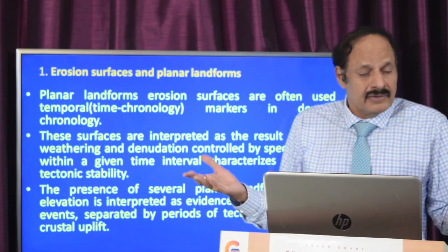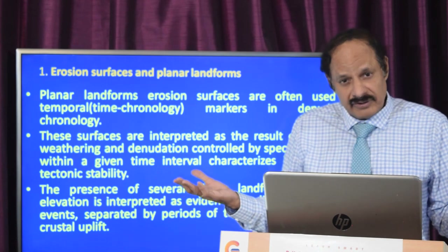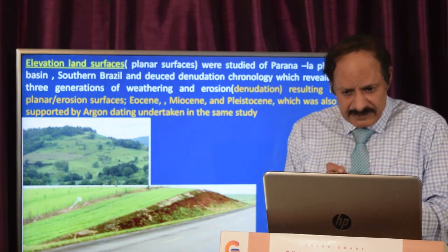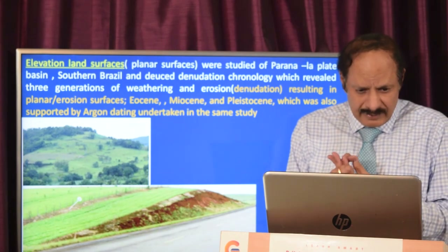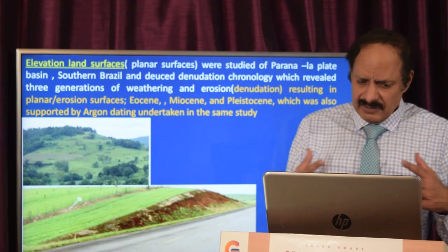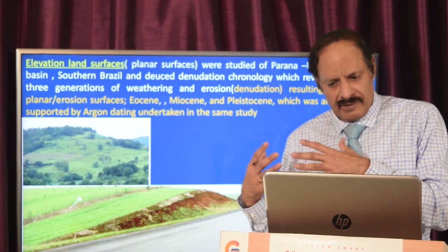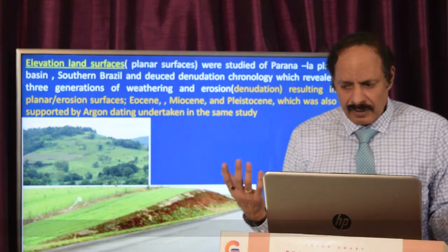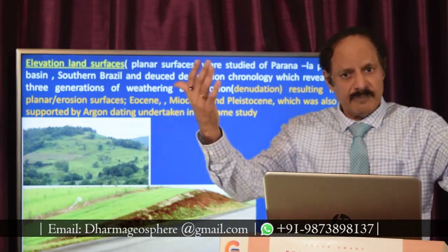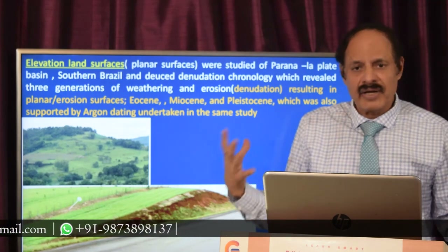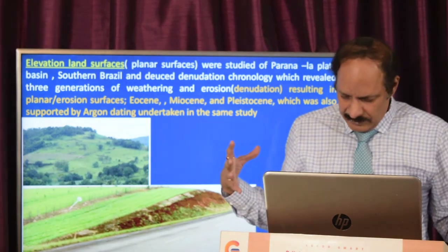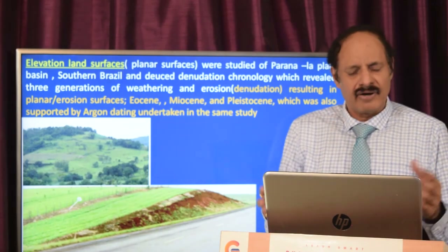It is very difficult to identify and use erosion surfaces where land has been uplifted, where there has been a lot of tectonic movement, or where there has been continental splitting — like in Madagascar or during the Proterozoic splitting of the African continent. The elevated transland surfaces were studied in the Paraná–La Plata basin in southern Brazil, where denudation resulted in erosion surfaces from the Eocene, Miocene, and Pleistocene. These were deduced from the planar surfaces, but supplemented and supported by argon dating in each period — you cannot simply look at the sediment order and deduce; it must be supported by a dating method.